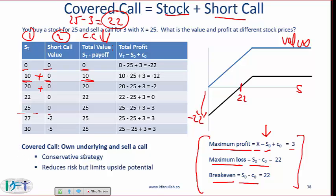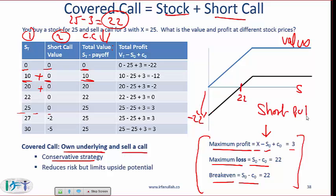Two more points on a covered call: you own the underlying and sell a call — this is a conservative strategy. If you believe the market will go up a little, you make money. If the market goes down, the fact that you sold the call gives you a cushion of three dollars. If the market goes up a lot, you don't gain a lot — your upside is capped. Importantly, the shape of the profit diagram for a covered call looks a lot like a short put. That is something that can show up on your exam.